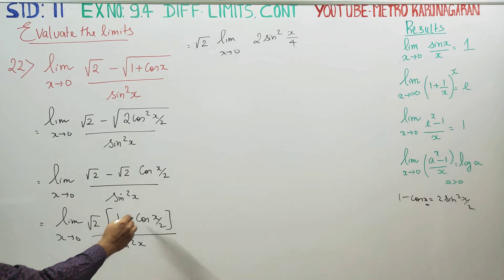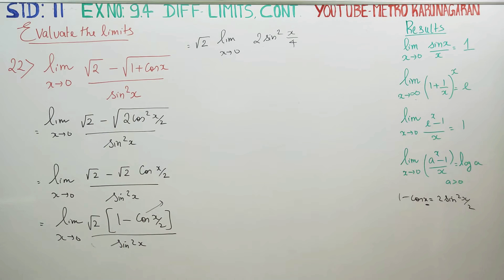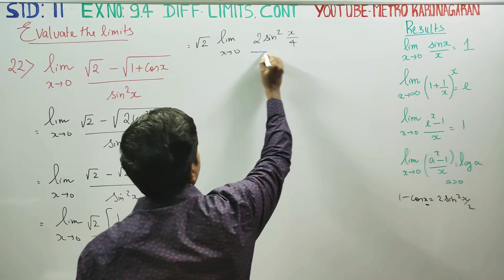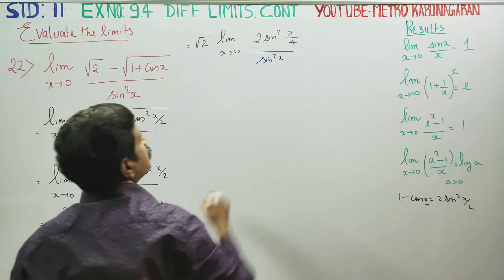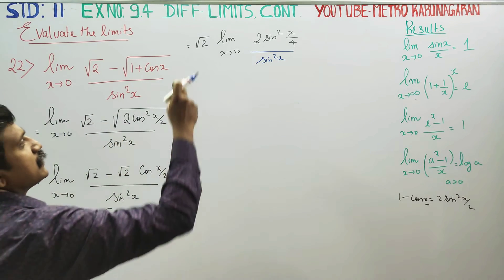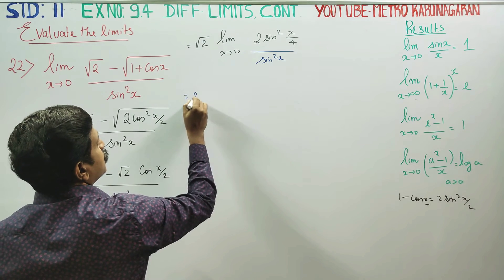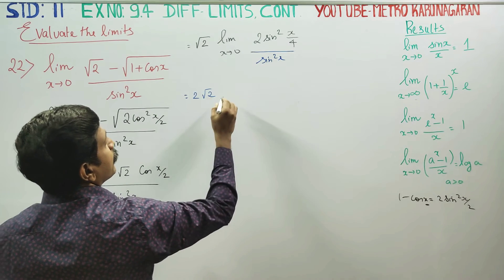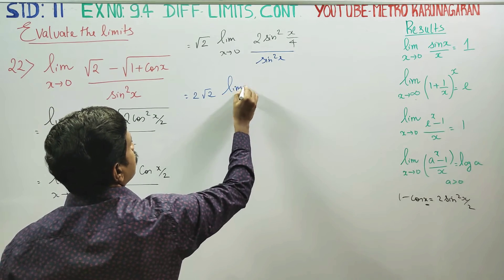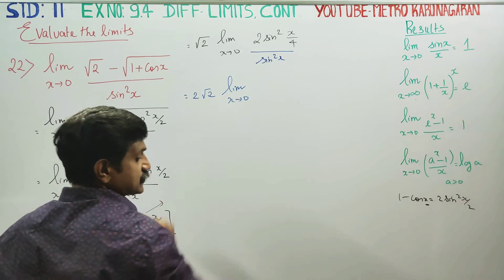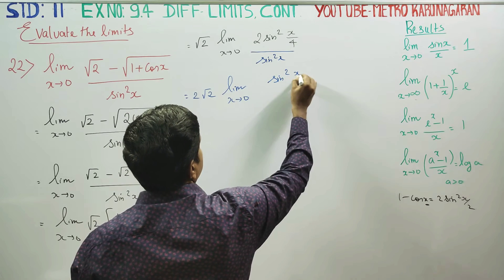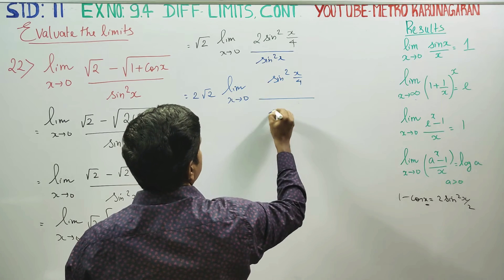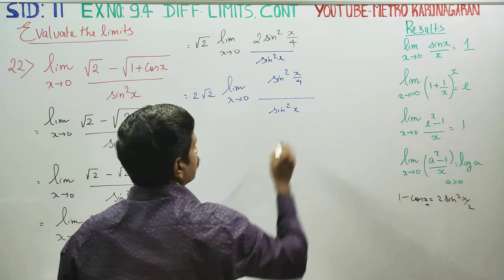We need to use the trigonometry formula: 1 minus cos x equals 2 sin squared x by 4. Dividing and taking 2 outside gives 2 root 2. Limit x turns to 0: sin squared x by 4 divided by sin squared x.